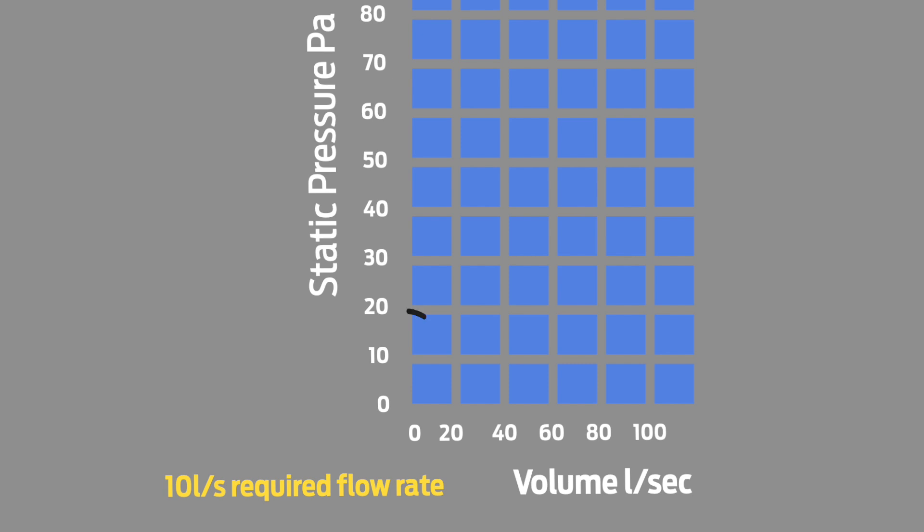Let's look at the 100mm fan first. Assuming we have 8 metres of straight duct, this would mean around 16 Pa of pressure drop over its length. As you can see, this sits inside the curve, so we can hit our target flow, ignoring bends and grills at this stage.